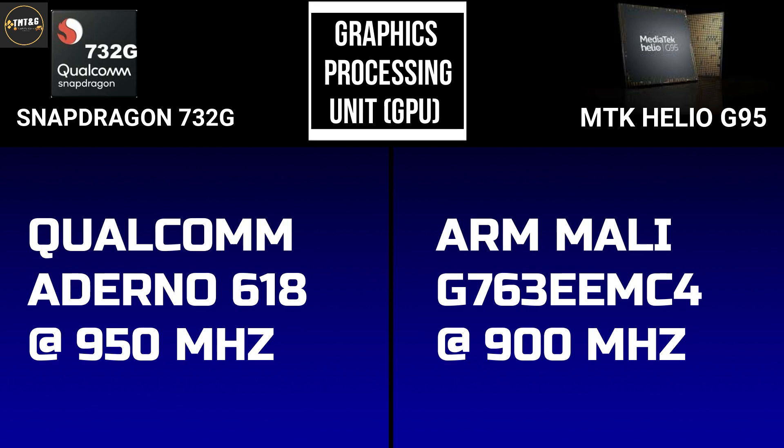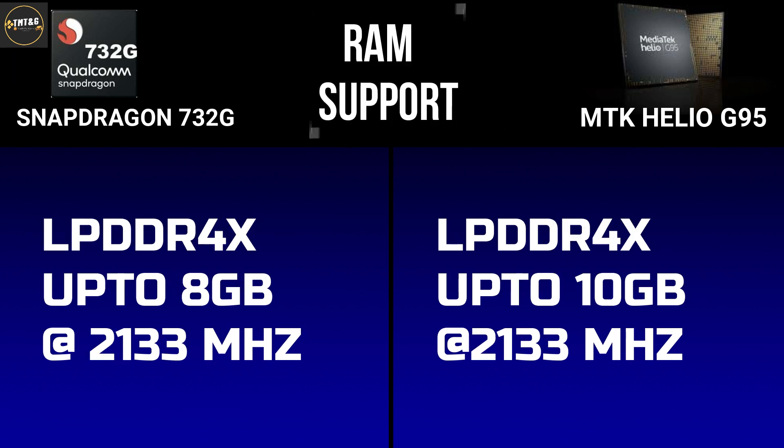The next comparison is the GPU, which is key for gaming. The Snapdragon 732G uses the Adreno 618 GPU at a frequency of 950MHz. The Helio G95 uses the Mali-G76 MC4 GPU at a frequency of 900MHz. So the Snapdragon 732G is a little bit better in GPU performance.